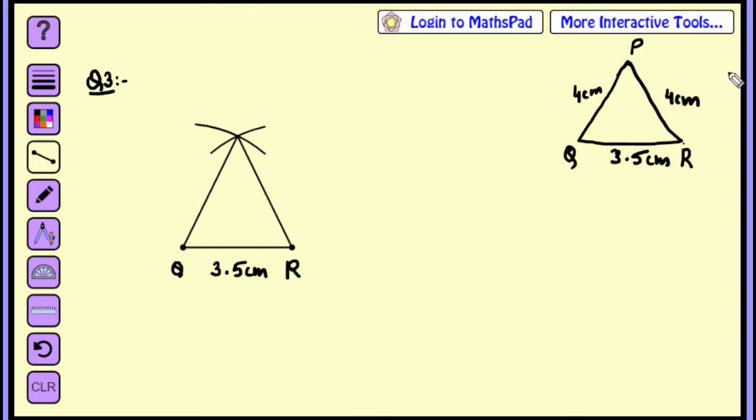So this is point P. PQ was 4cm and PR is also 4cm. So this is the required triangle, triangle PQR. Now we have asked what type of triangle is this PQR. How is this triangle?